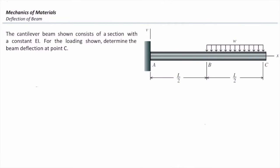So this is another problem. In this problem, a cantilever beam shown consists of a section with a constant EI, and the problem looks for the deflection at point C. Again, here we don't see any loading like that, so we need to use a trick to find the deflection of that beam.